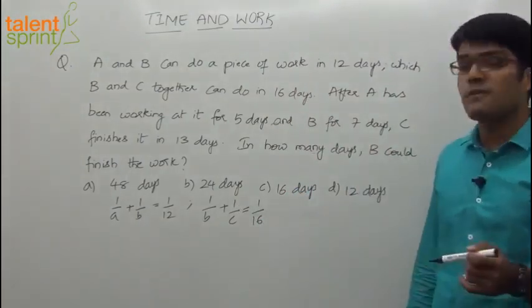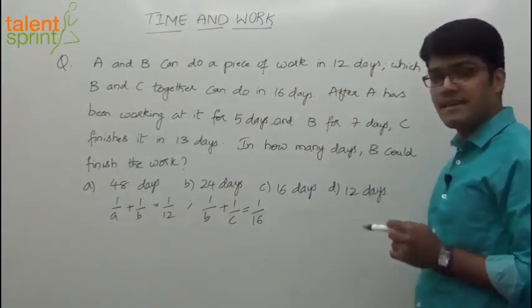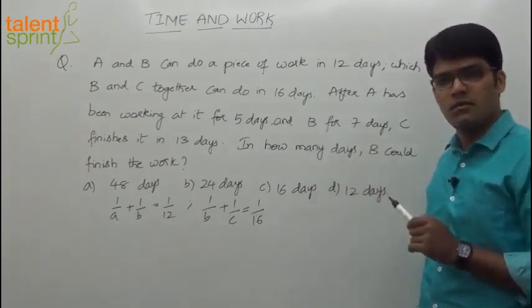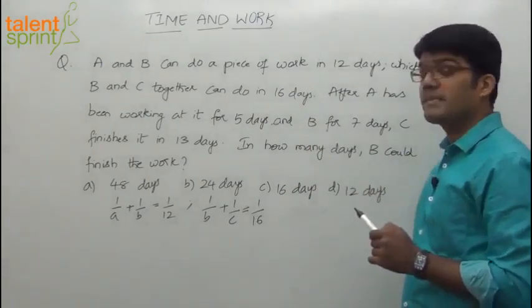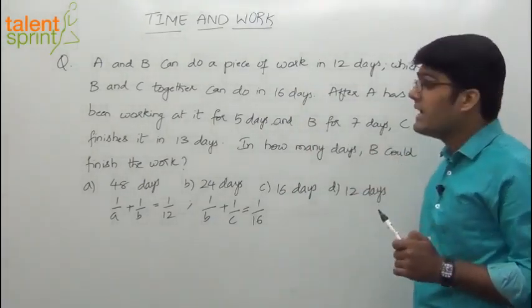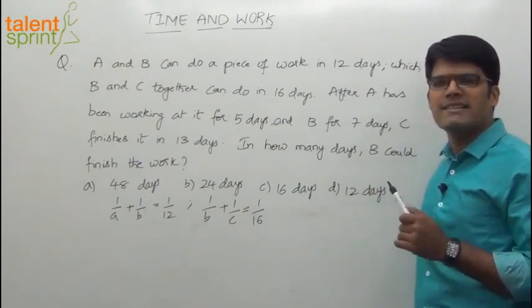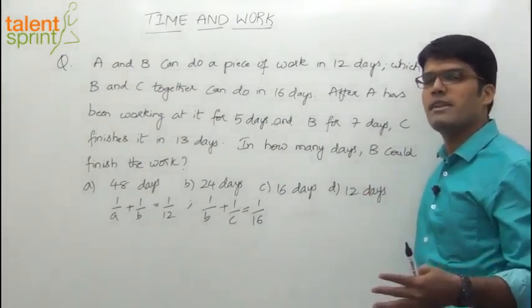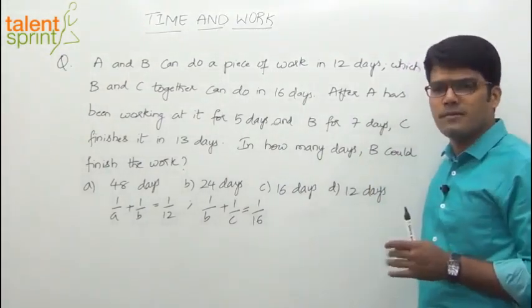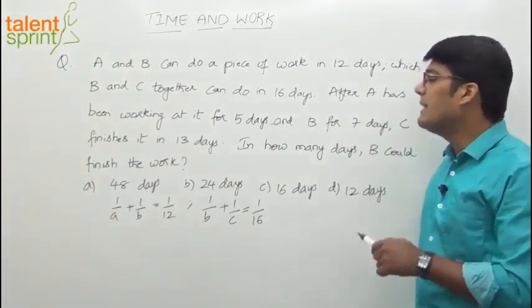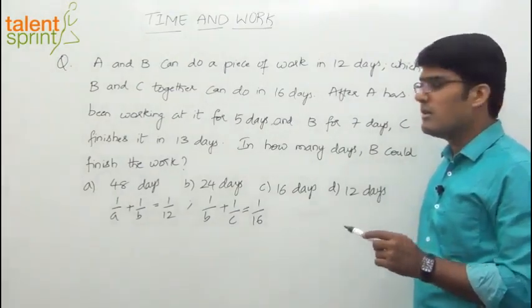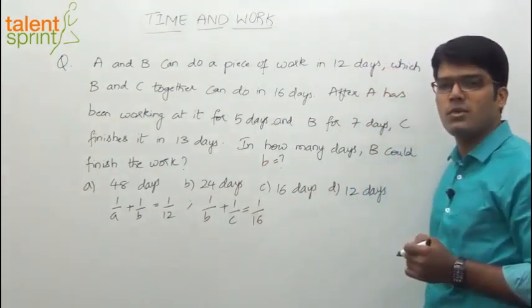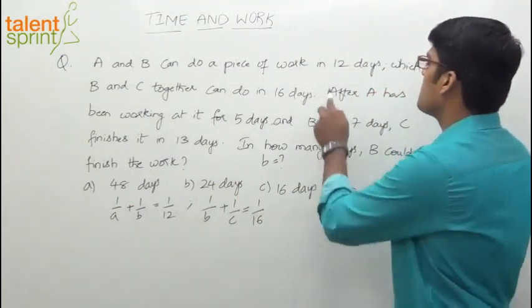After A has been working at it for 5 days and B for 7 days, C finishes it in 13 days. So first A has worked for 5 days, and then B worked for 7 days, and then finally C finishes the work in 13 days. All 3 persons are working but not simultaneously. First A works for some number of days, then followed by B for some days, followed by C for the remaining 13 days.